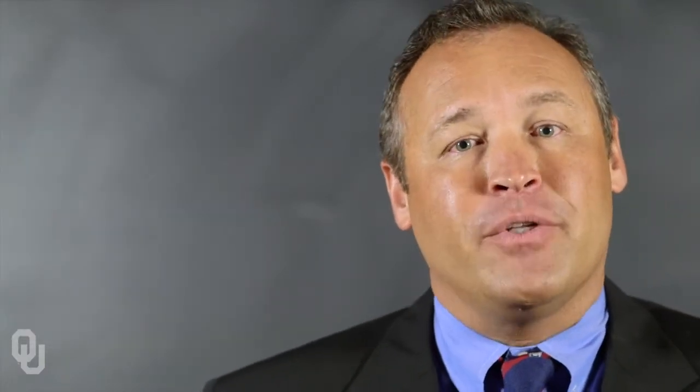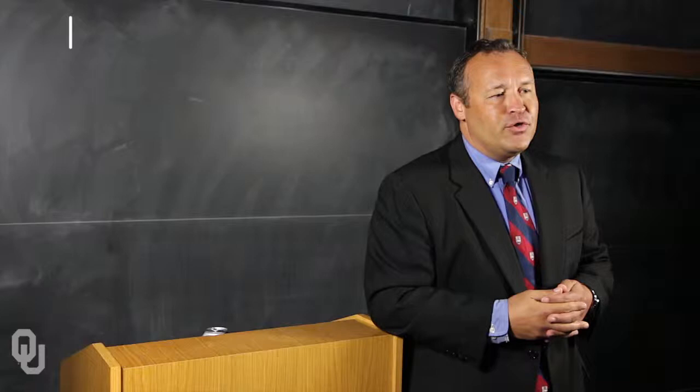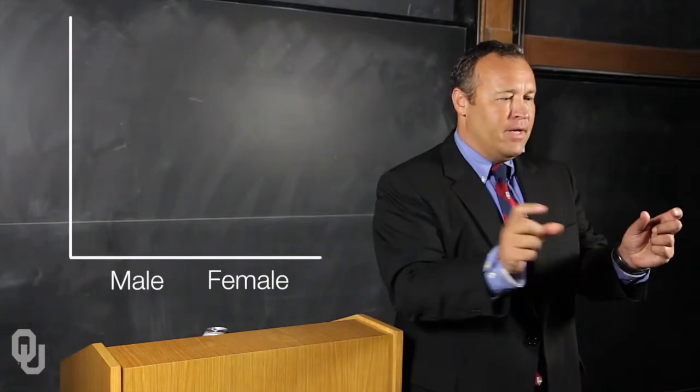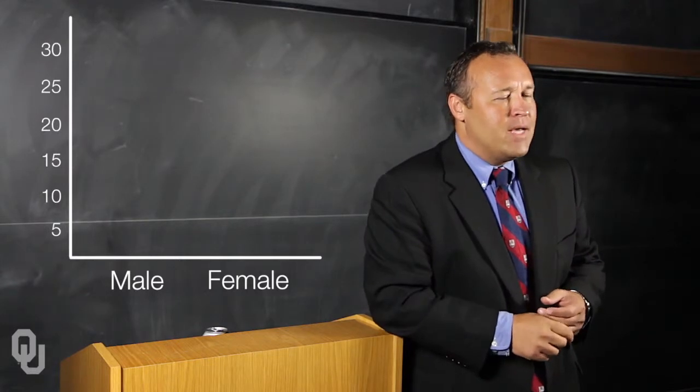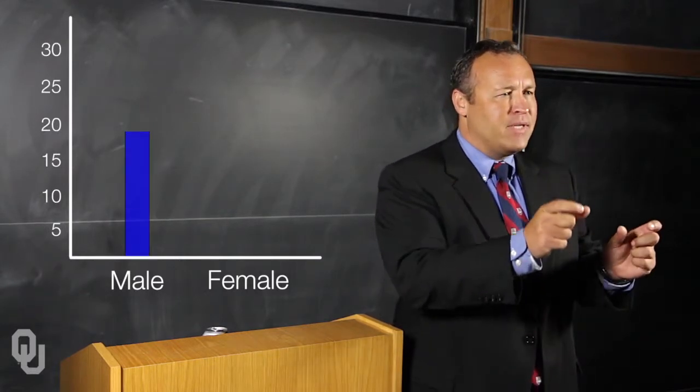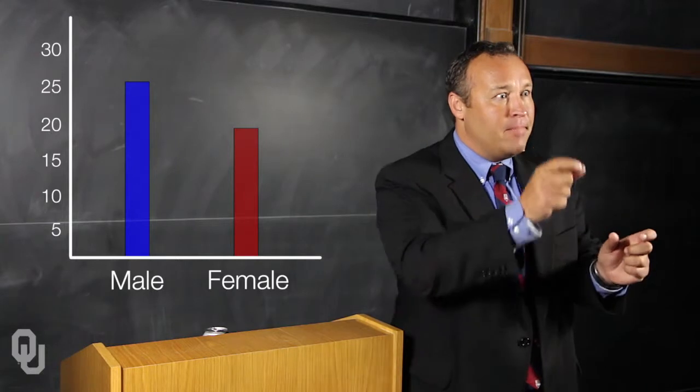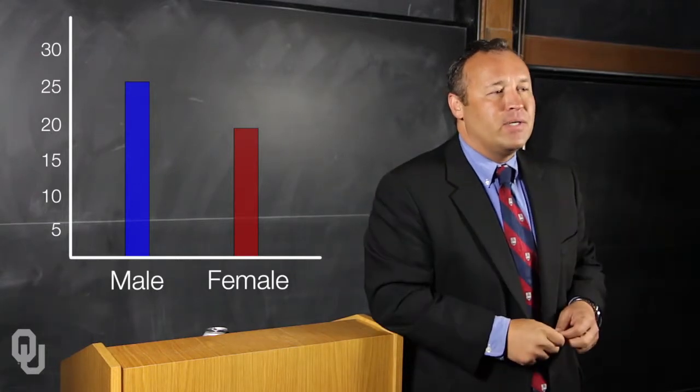Once we know what level of measurement we have, that will determine the kind of chart that we draw. For nominal and ordinal variables, we typically draw bar charts. Gender, for example, is measured at the nominal level, so you have two categories — male and female. You put those on the bottom axis, and on the side you would have frequencies and percentages, and then you would have a bar that represents how many people are inside each of those categories. It's a great way of looking at data and understanding what the categories look like in comparison to each other.